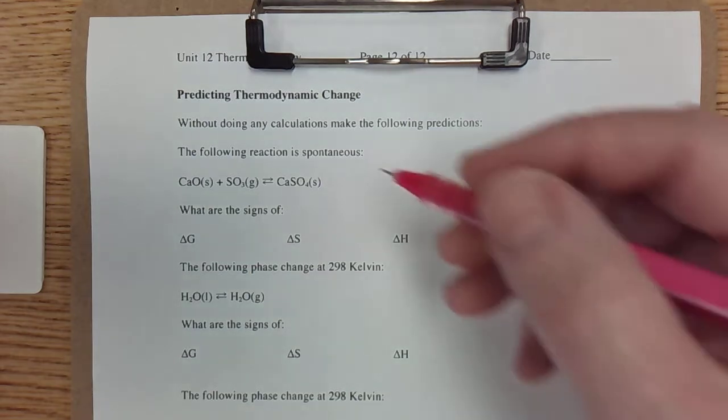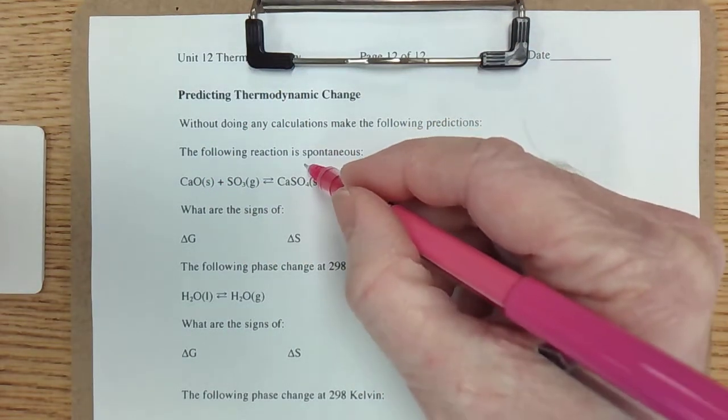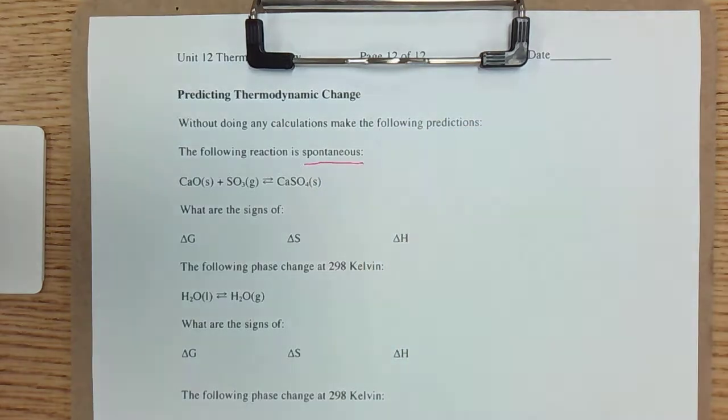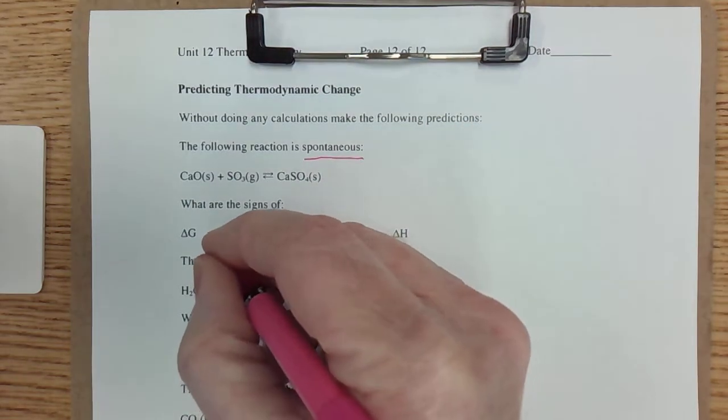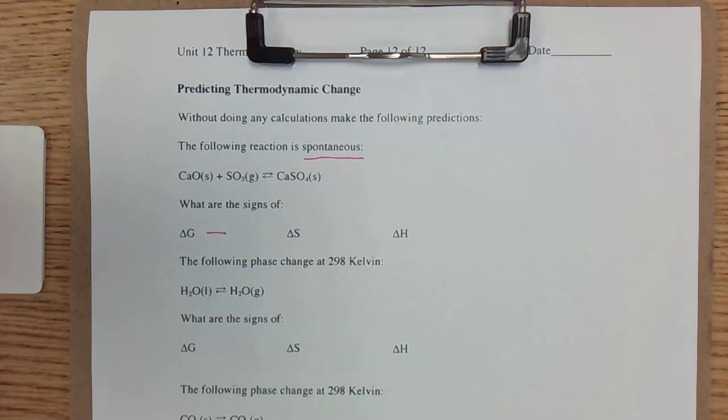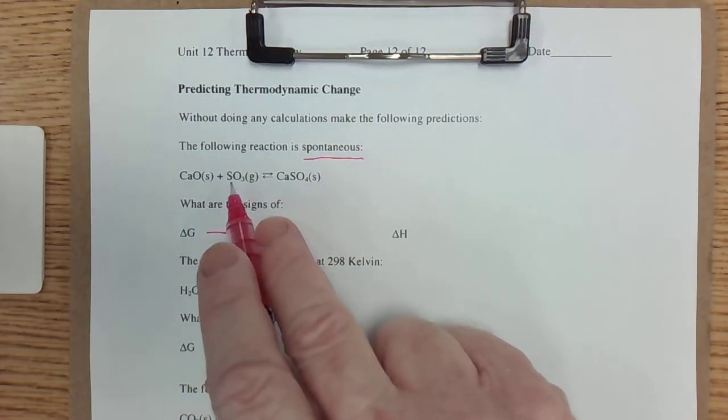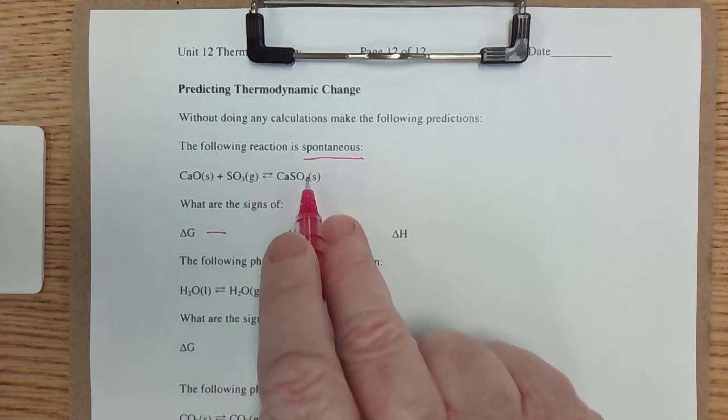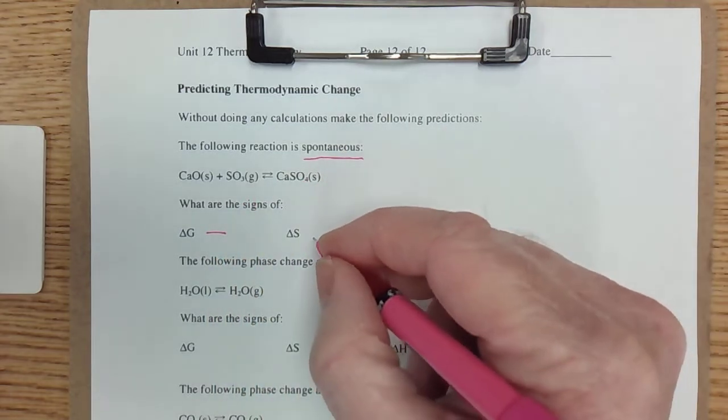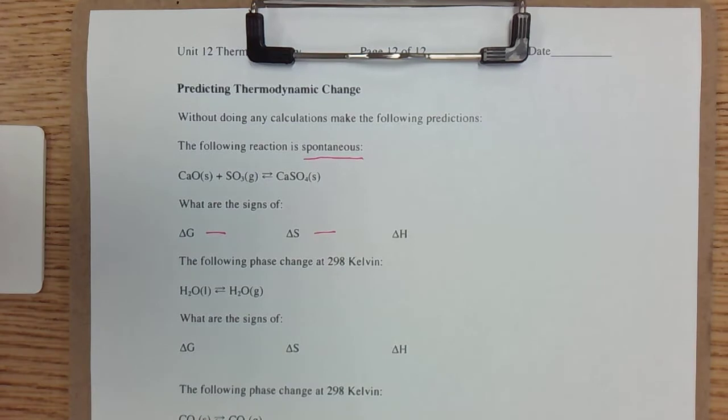We have a reaction here that is spontaneous. Right away that tells me that ΔG is negative. I know ΔG is negative for spontaneous reactions. Now, how about ΔS? Well, I've got two moles turning into one mole. I've got gas turning into solid. That sounds an awful lot like ΔS being a negative number.